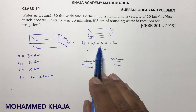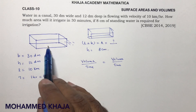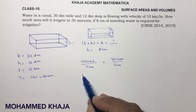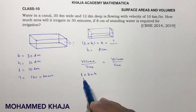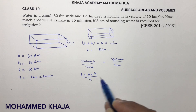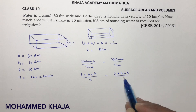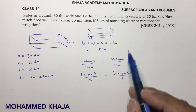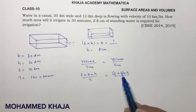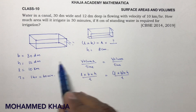Both volumes will be the same, so I write: l × b × h ÷ time = l × b × h ÷ time. Here I need to find how much area, so I need to find l into b. Now observe the units — centimeter, kilometer, decimeter, decimeter — all need to be converted.